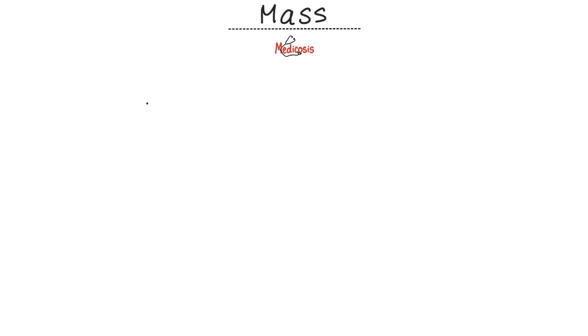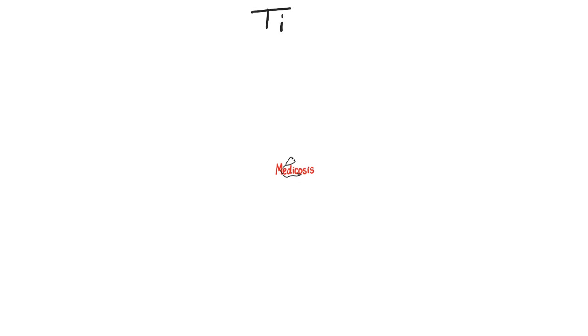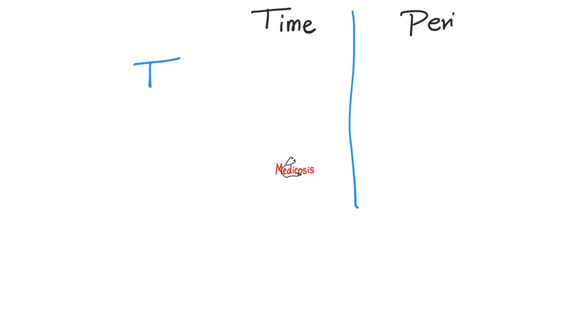How about mass? The dimensional formula for mass is just M — that's it. How about time? The dimensional formula for time is T. And periodic time is just another time, so it too has a dimensional formula of T.